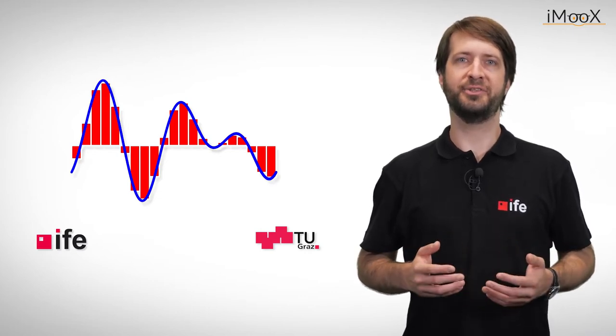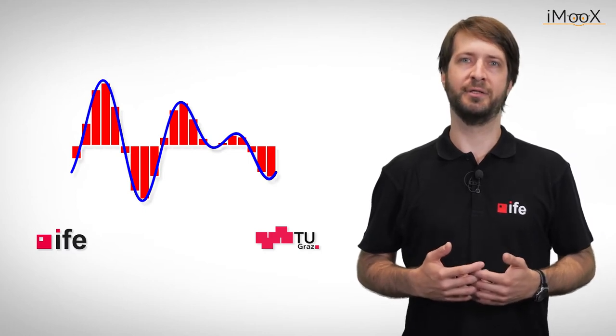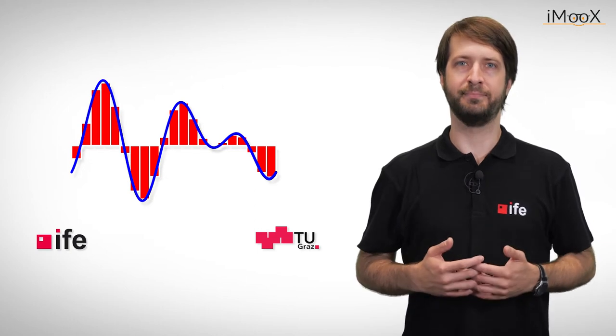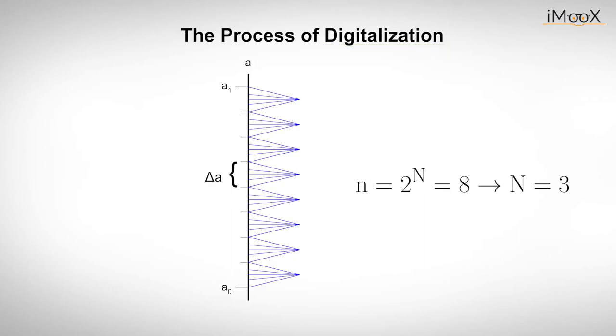When an analog value is quantized, there is always an error which cannot be avoided. It's called the quantization error and we discuss it a little later. First, we want to have a look at this simple example of how the process of digitalization works. Here we take an analog signal that has an infinite amount of intermediate values and map it with only eight different digital values.